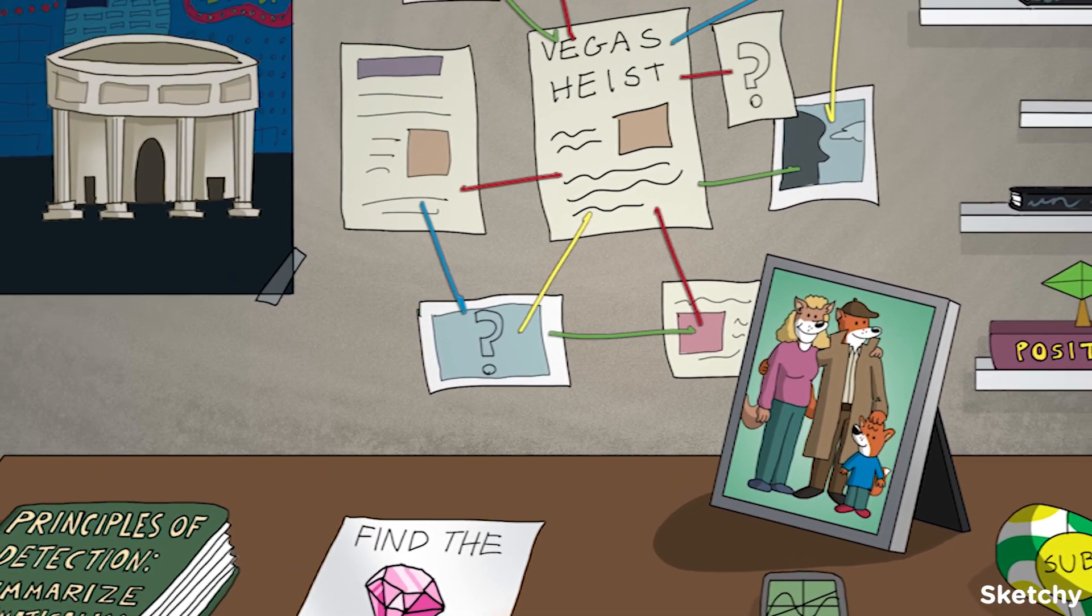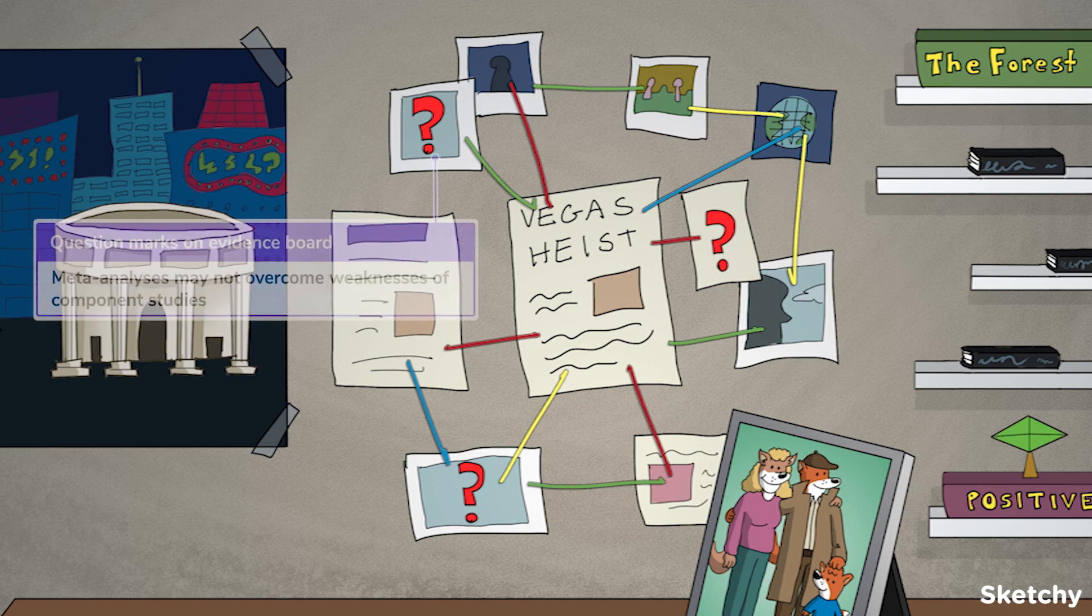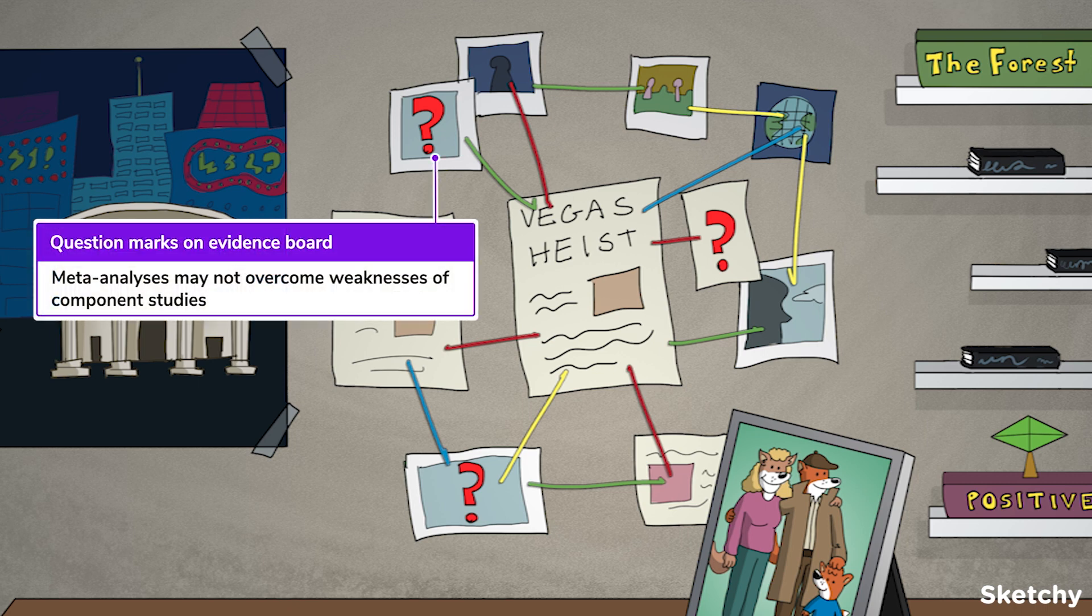Also, you have to consider that your meta-study may not overcome weaknesses of all the component studies. We're talking bias, confounding, and other flaws found in the study methods. Yeah, even StatLock has some remaining questions yet to be solved in this case.